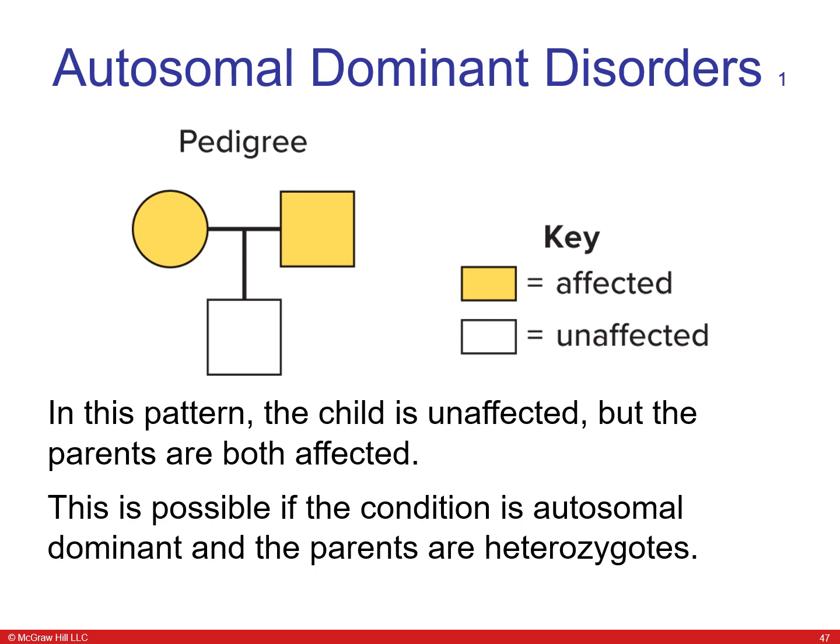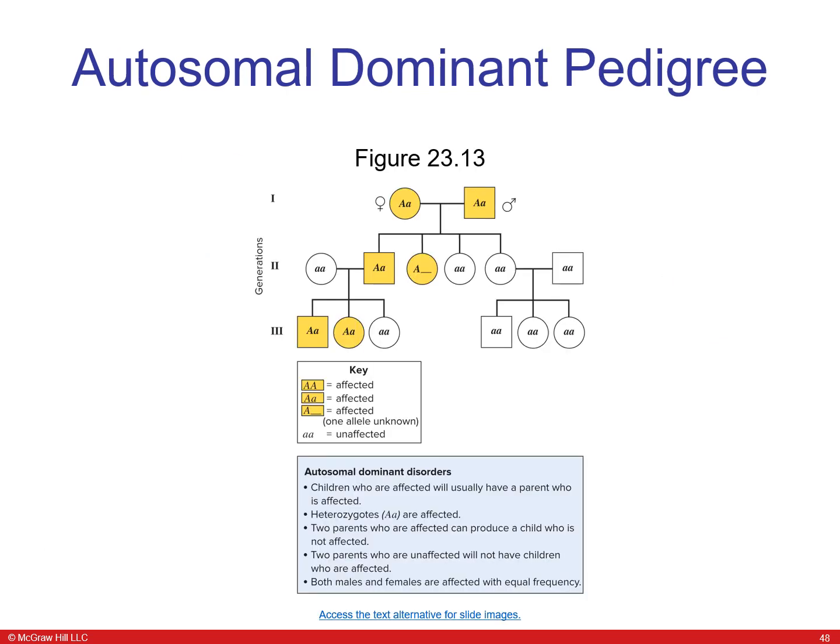Autosomal dominant disorders: a child can be unaffected while both parents are affected, which is possible if the condition is autosomal dominant and both parents are heterozygotes. In the pedigree of an autosomal dominant disease, children who are affected usually have an affected parent. Heterozygotes are also affected, two affected parents can produce an unaffected child, both males and females are affected equally, and affected individuals appear in every generation.